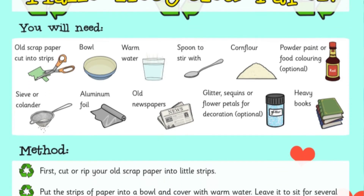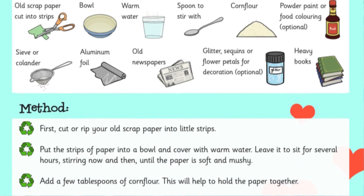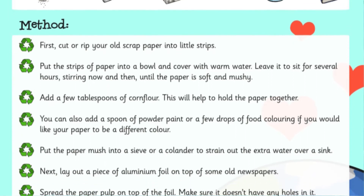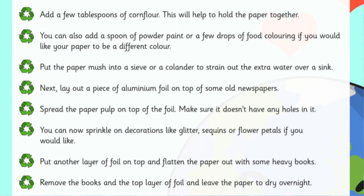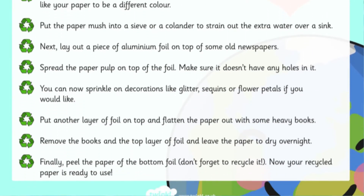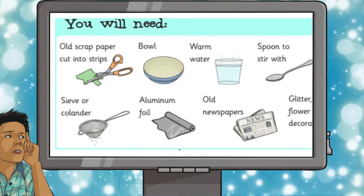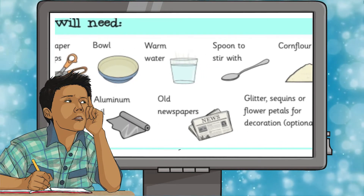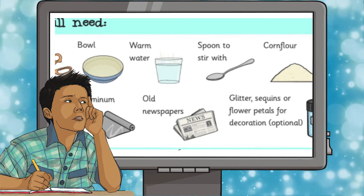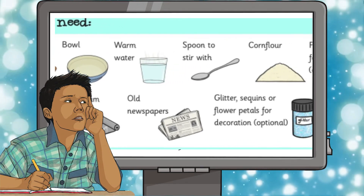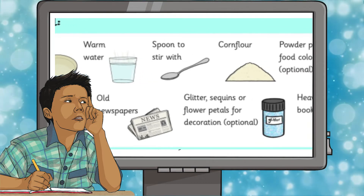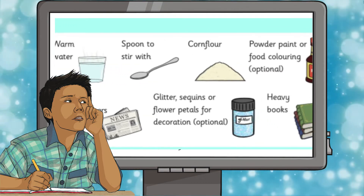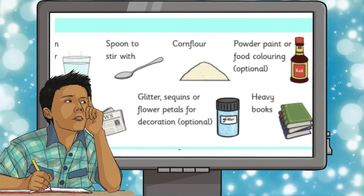Check out the make recycled paper instruction sheet. This resource is designed to teach you how to make paper from recycled materials. Download onto a computer or print off the instruction sheet and gather the materials listed. This will teach children how easy it is to recycle and reuse materials to make other exciting things from these recycled materials.